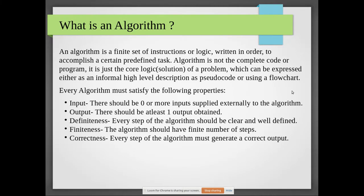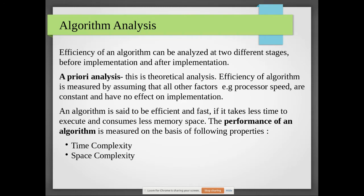Every algorithm must satisfy the following five properties. First, it must have zero or more inputs — an algorithm may not have an input at all, or it may have more than one. Second, there will definitely be at least one output. Third, definiteness: every step must be clear and well-defined. Fourth, finiteness: the algorithm should produce a result in a finite number of steps. Fifth, correctness: every step must generate a correct output.